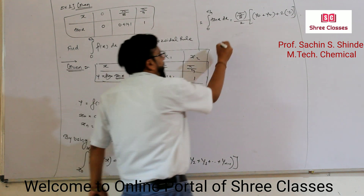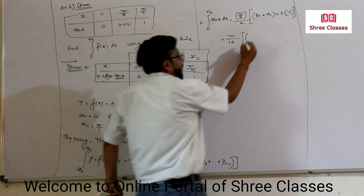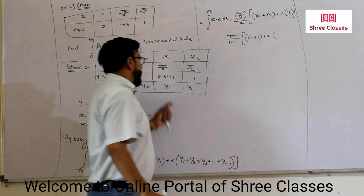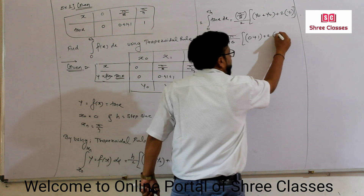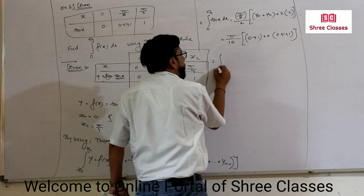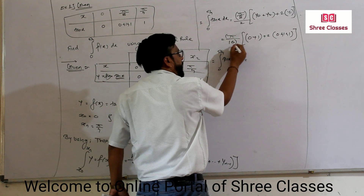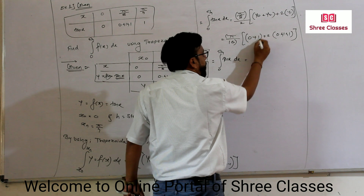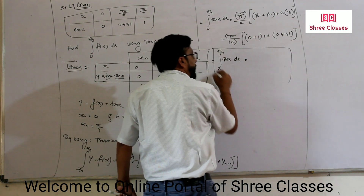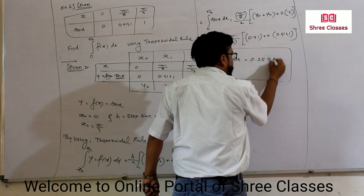The formula gives π/16 times (y0 + y2 + 2·y1). y0 = 0, y2 = 1, and y1 = 0.4141. So it becomes π/16 times (0 + 1 + 2 × 0.4141). Calculating this using a calculator — shift π divided by 16, times (0 + 1 + 2 × 0.4141) — we get the answer: 0.3589.